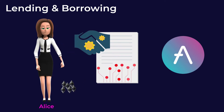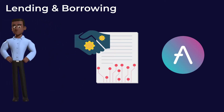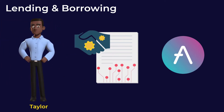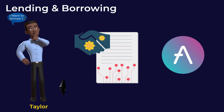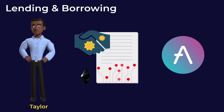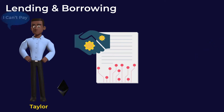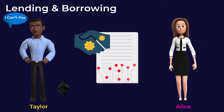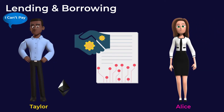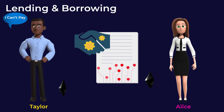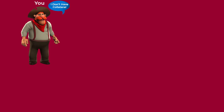When someone wants to borrow Alice's money, he has to provide collateral to the smart contract first. So if he defaults and can't repay the loan, the smart contract automatically liquidates his collateral and pays back Alice her money. What if you don't have collateral but still want to borrow money to use in arbitrage? Well, you can borrow $100,000, for example, right now, without providing any collateral.